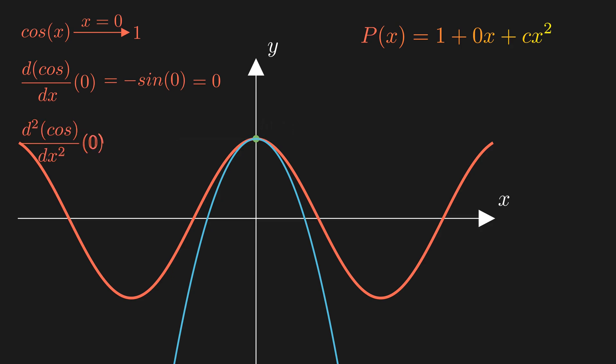The second derivative of cosine is negative cosine, and at x equals 0, its value is negative 1. The second derivative of the polynomial is 2c. If we set that equal to negative 1, we get c equals negative 1 half.